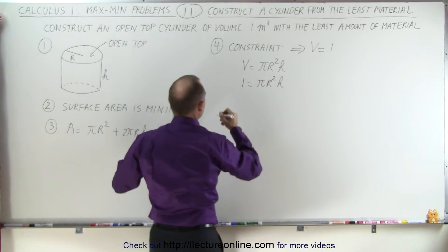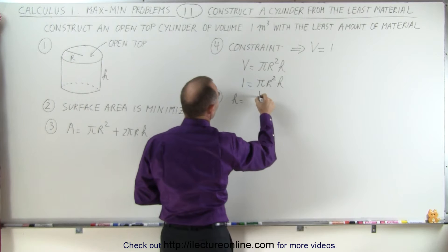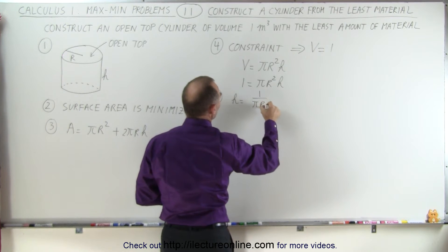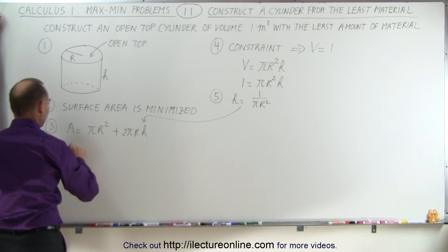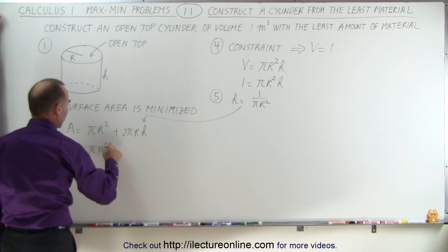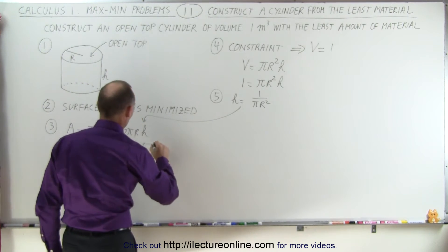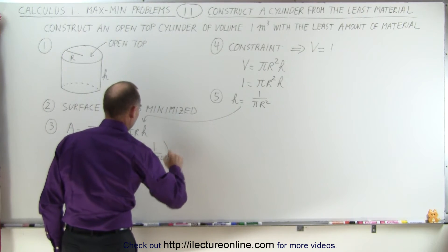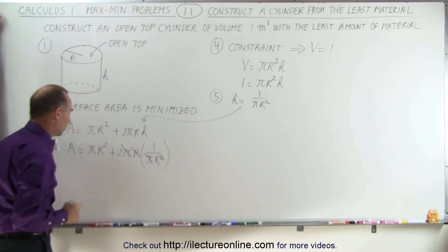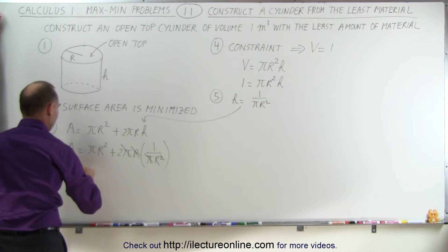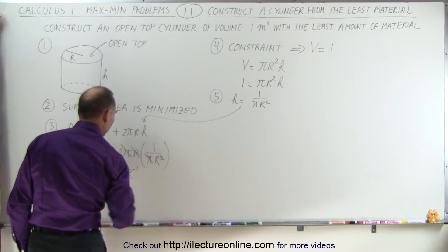So step five, we're going to solve this for one of the variables. Let's say h. h is equal to 1 divided by pi r squared, and substitute that back into our equation. That tells us now that the area is equal to pi r squared plus 2 pi r times h, which can be written as 1 over pi r squared. That means this pi is eliminated, and this r eliminated with one of those r's, which means now that the area is equal to pi r squared plus 2 r to the minus 1 power.